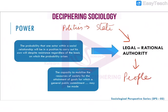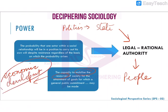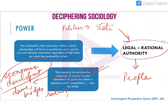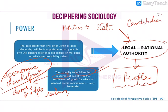The state also has the right to mobilize resources for the attainment of goals. This goal could be economic development, construction of dams, bridges, railways, or roads — all these come under the mobilization of resources. This is possible only because the state has been given legal rational authority by the people. In India we are under the highest law, which is the Constitution. So the Constitution is the source of authority for the state.